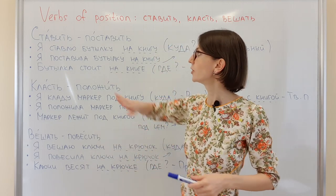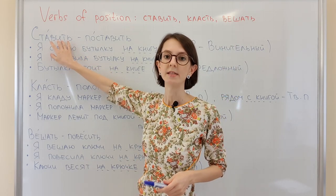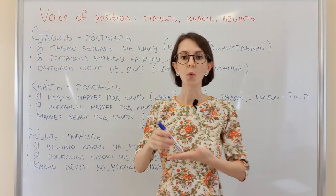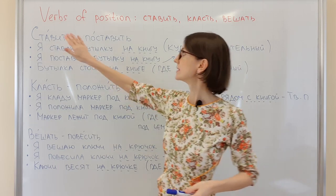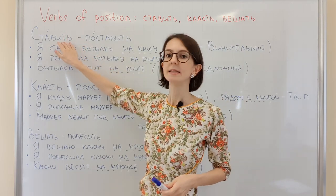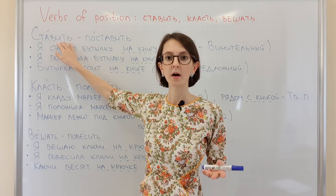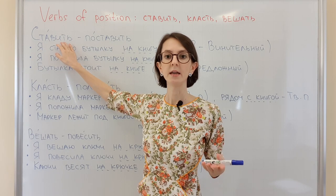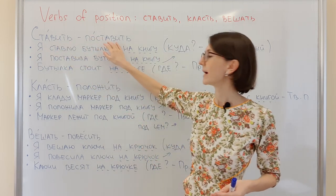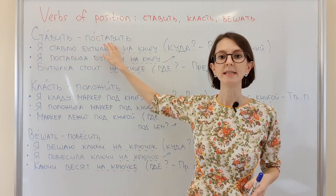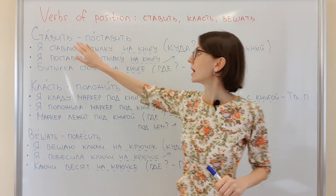The first verb is ставить, which means to put something vertically. Ставить is NSV — it is an imperfective verb. Поставить is SV — a perfective verb.